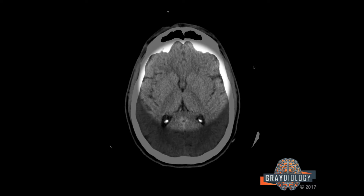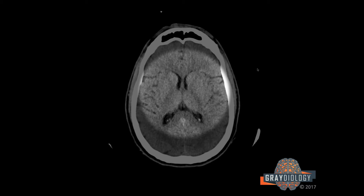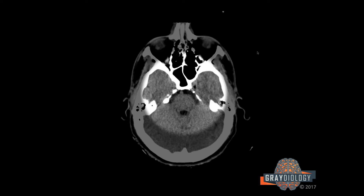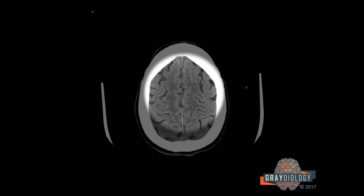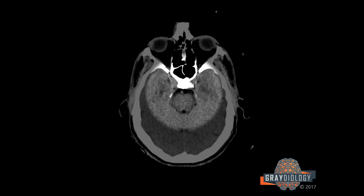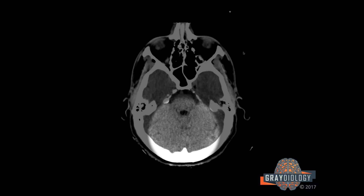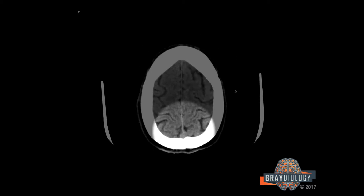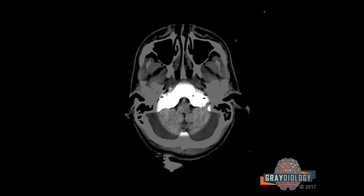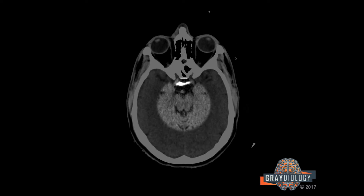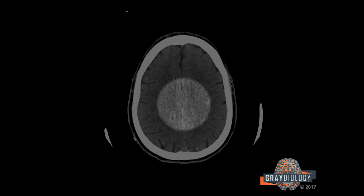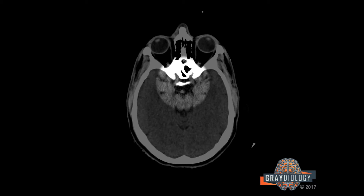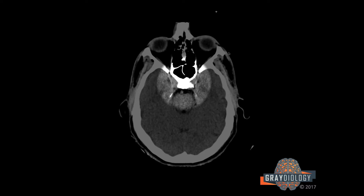Then I'll look at the frontal lobes and the temporal lobes. Sometimes when I have a high index of suspicion, I'll go left temporal lobe, left parietal lobe, right parietal lobe, right temporal lobe. Then I'll look at the cerebellar hemispheres and follow them all the way up along the occipital lobes to cover everything in the brain. Once I've done that, I'll come back down and find the cervical cord. I'll go: cervical cord, medulla, pons, peduncles, thalami. Then I'll do the basal ganglia and follow those down to the suprasellar cistern and the sella and parasellar structures.